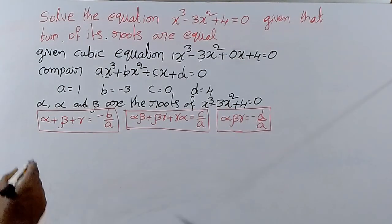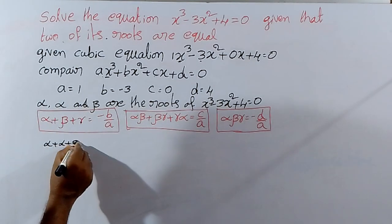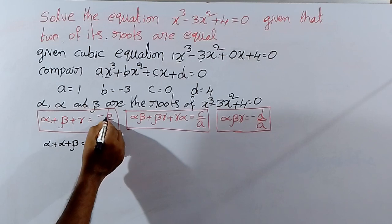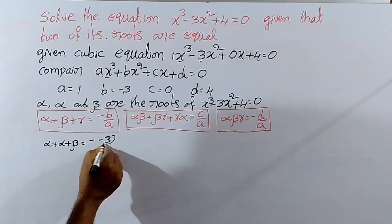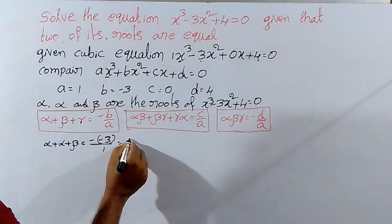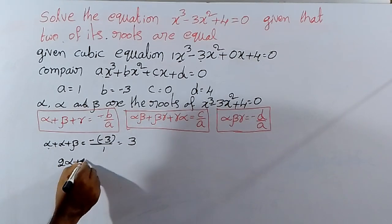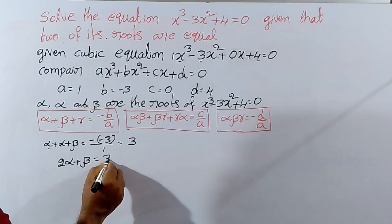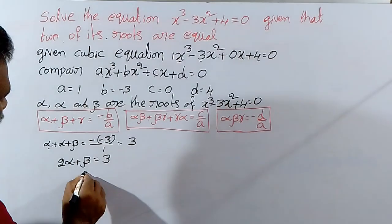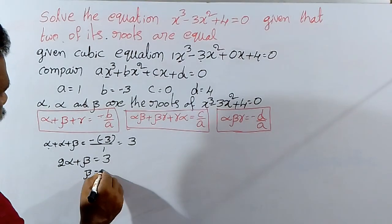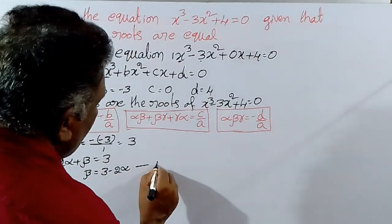Now, alpha plus alpha plus beta equal to minus B by A, that is minus of minus 3 by 1, equal to 3. So 2 alpha plus beta equal to 3. Therefore beta equal to 3 minus 2 alpha. That is equation 1.